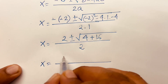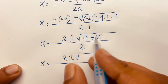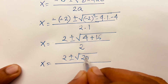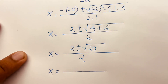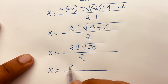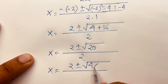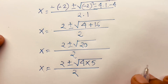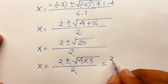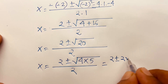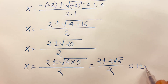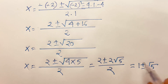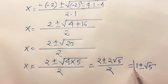So x equals 2 plus or minus square root of 20. Since 20 equals 4 times 5, it will be 2 plus or minus square root of 4 times square root of 5, which is 2 plus or minus 2 root 5, over 2. Dividing through by 2, the 2s cancel, and we find out x equals 1 plus or minus square root of 5. This is our final answer.